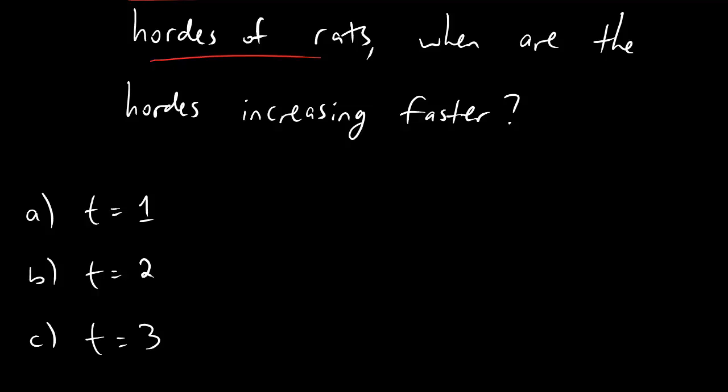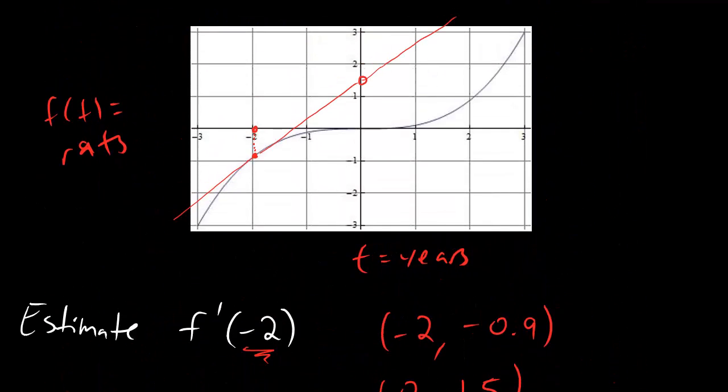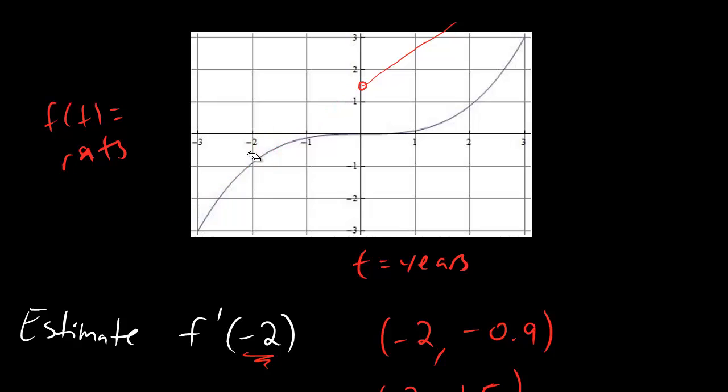t equals 1, t equals 2, t equals 3. So let's go back up here, let's erase some of this crap that I drew before. We're looking at time 1, time 2, and time 3. And we're going to try to figure out when the rate of increase is the fastest. Okay, so let's kind of break this down.